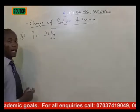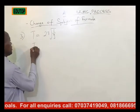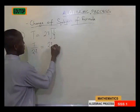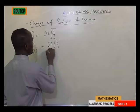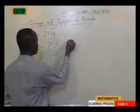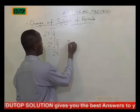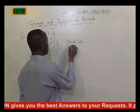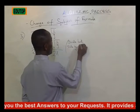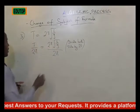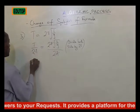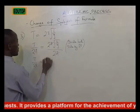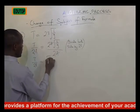We are going to divide both sides by 2 pi. So that would be T all over 2 pi is equal to 2 pi square root of L over G all over 2 pi. This 2 pi will cancel this out. So we are having T all over 2 pi is equal to square root of L over G.